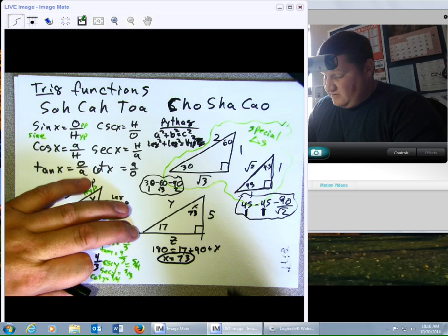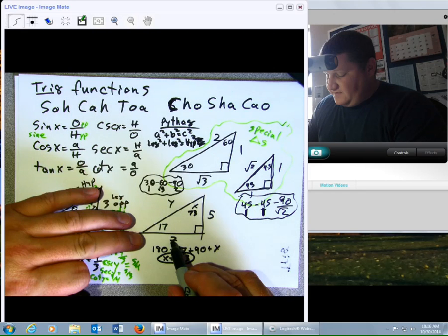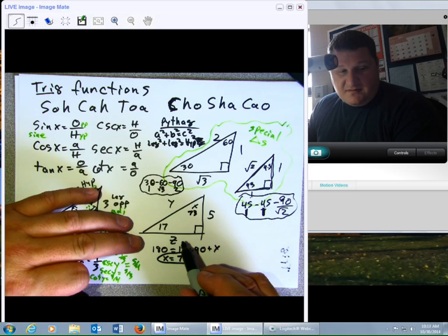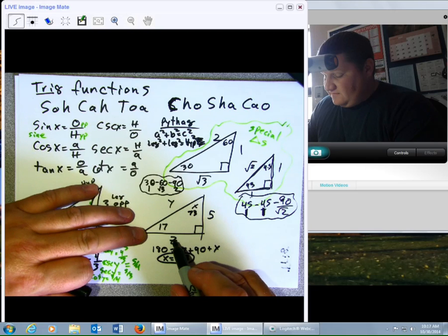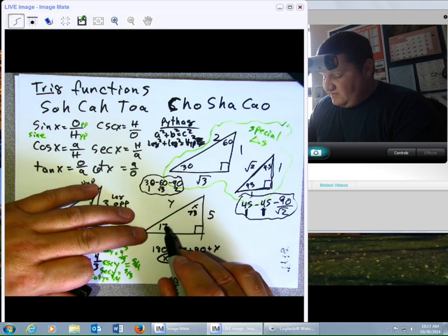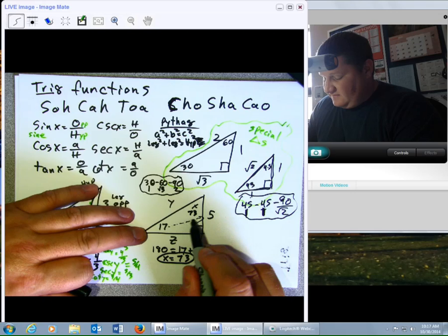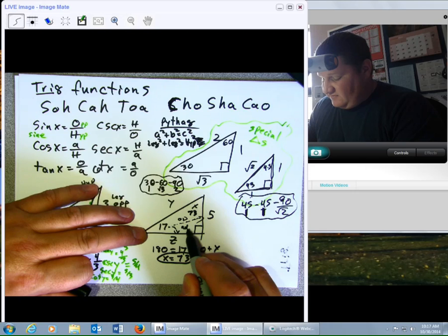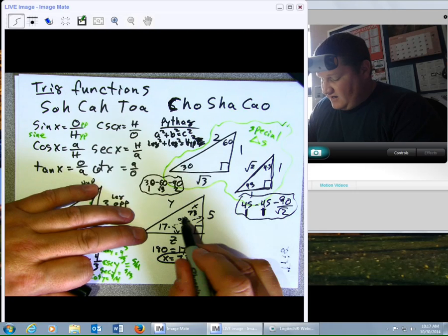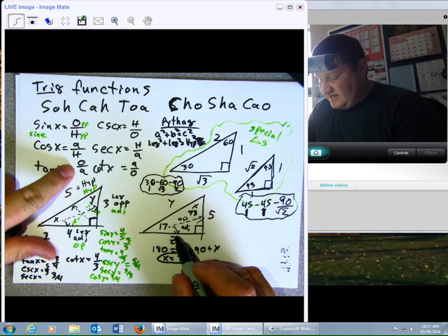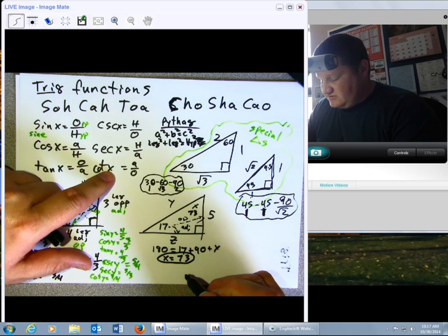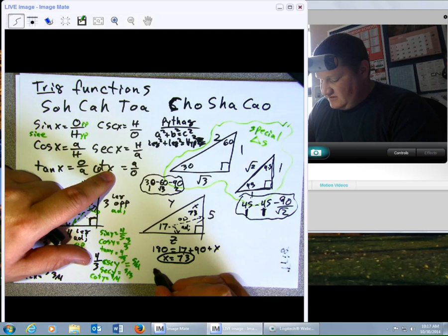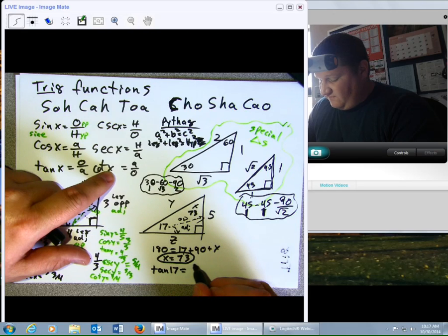Now, if, on the other hand, I want to find this side, I'm going to have to work a little bit harder at it. I know the 17. I know the side that is opposite the 17. I want to know the side that's adjacent to 17. Well, wait a minute. Opposite and adjacent, that is either tangent or cotangent. I'm going to stick with tangent. Tangent of 17 degrees equals 5 over Z.